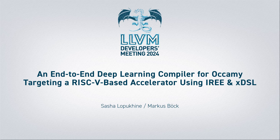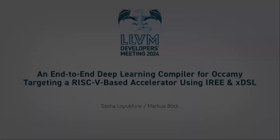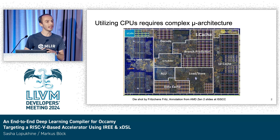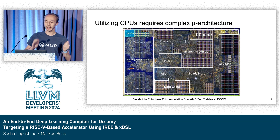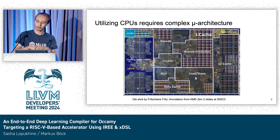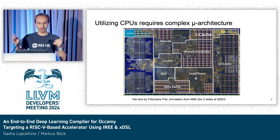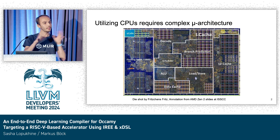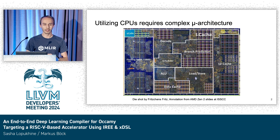I'm sure you've all seen a picture of this somewhere on the internet — a modern CPU die shot, specifically of Zen 2. If we look at this, there are a lot of things present in our modern CPUs just to make our generic code faster, like branch prediction, load stores, voltage decoders, and so on.